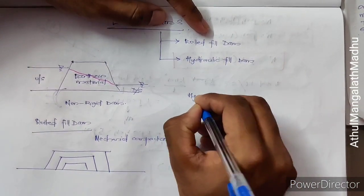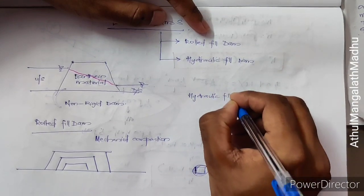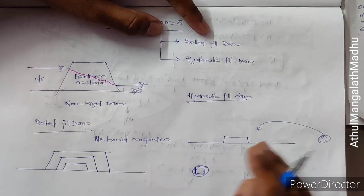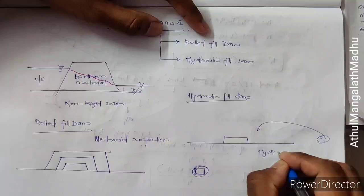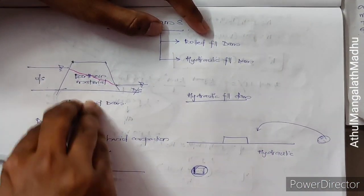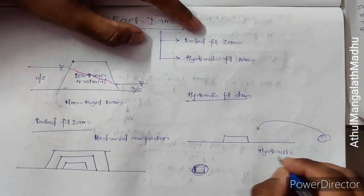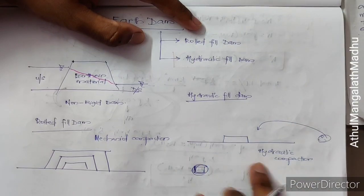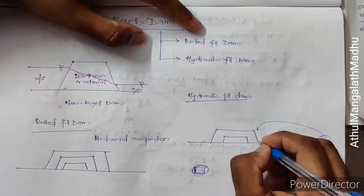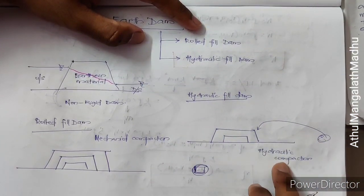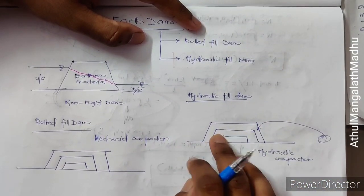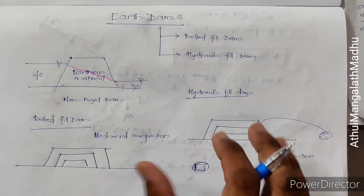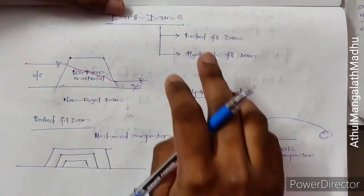The hydraulic fill dam works differently. We transport materials to the site, but instead of mechanical compaction, we use hydraulic compaction — pressing the material using a hydraulic machine. After completing the first layer with hydraulic compaction, further material is added and compacted hydraulically for each successive layer. This type of dam using hydraulic compaction is called a hydraulic fill dam.